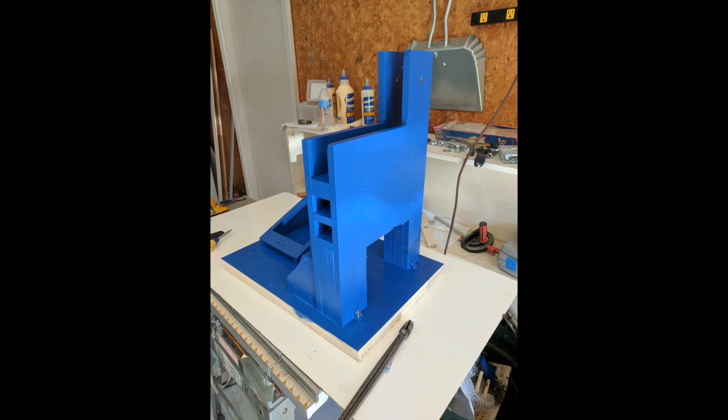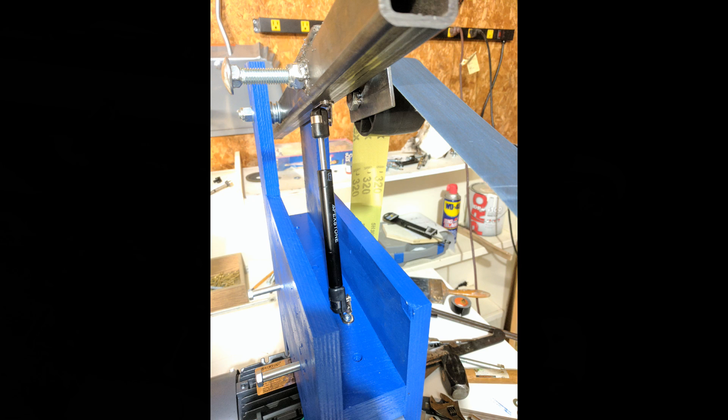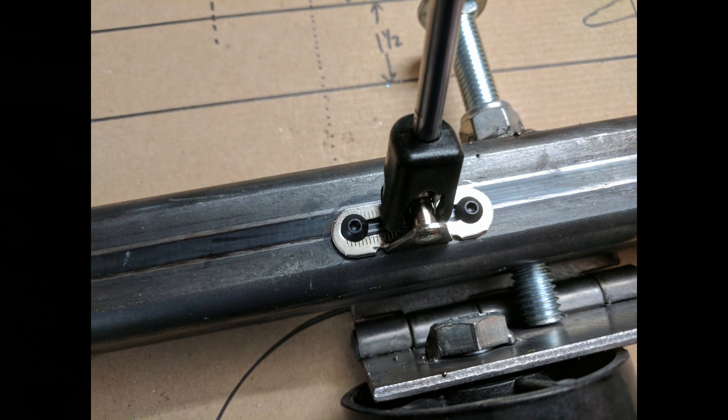So then I disassembled everything and painted it this wonderful shade of blue. Now I modified the design to use this 25 pound gas spring. The gas spring is mounted to the top arm using two 4 millimeter machine screws.